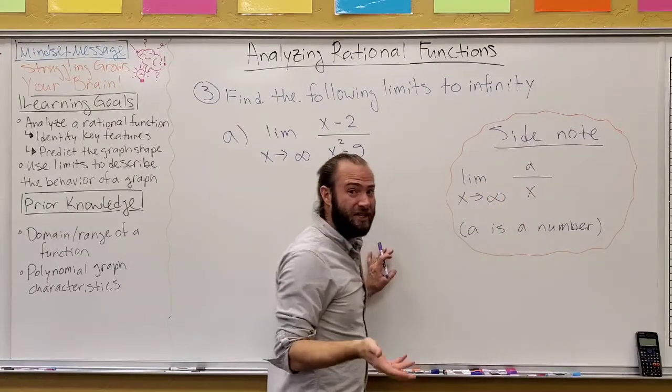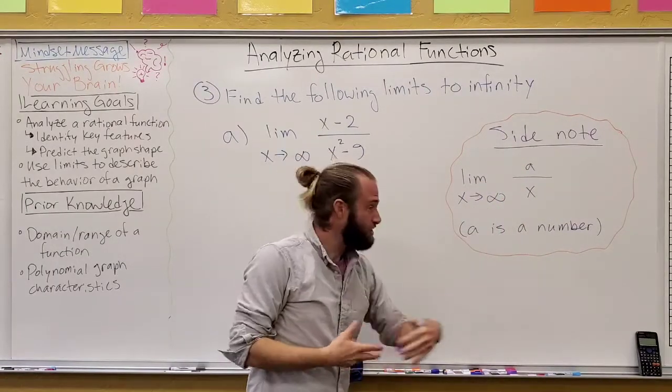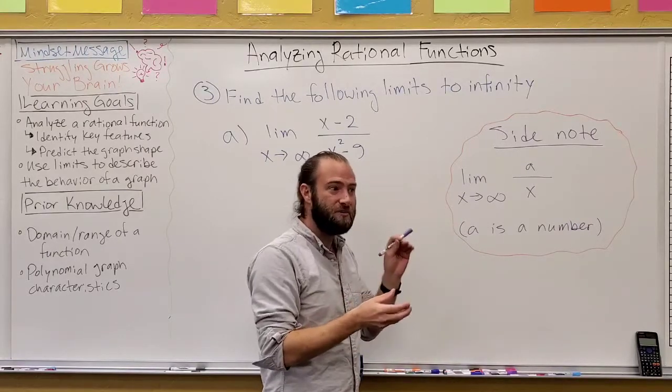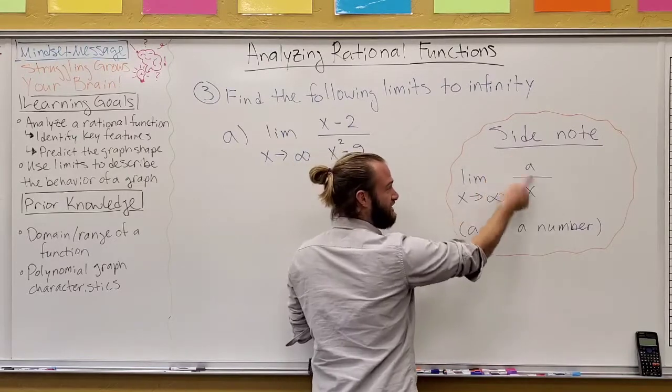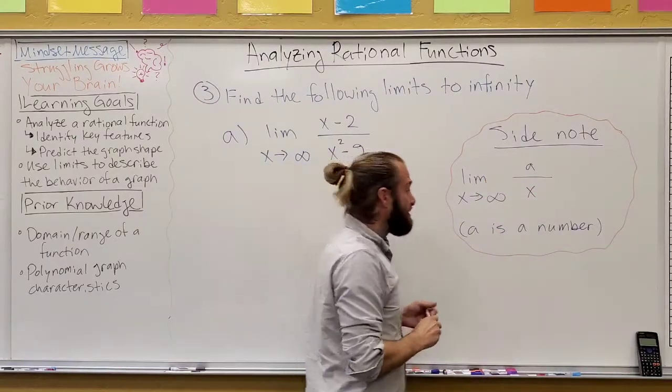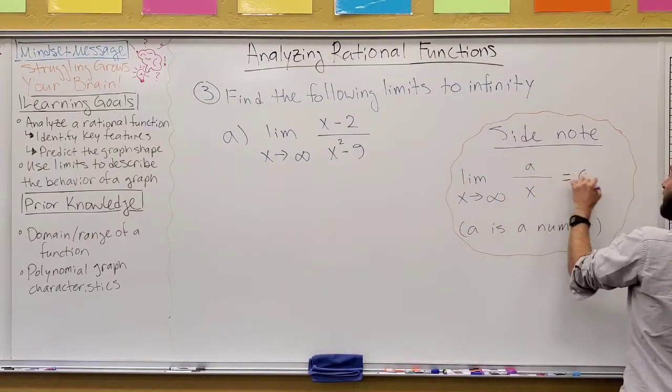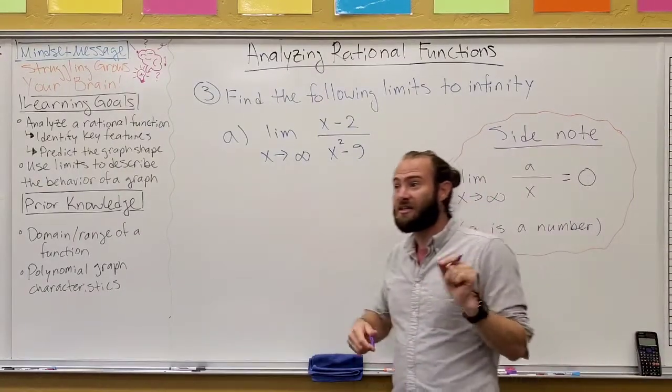like for example, 1 over 1 million, and if I let that bottom just keep getting bigger, that overall outcome just keeps getting closer and closer and closer to zero, right? So if we fix this and let this get bigger, then this just gets closer to zero.